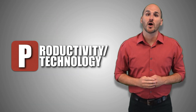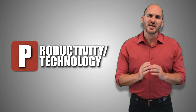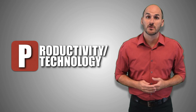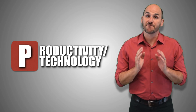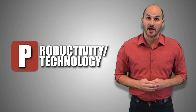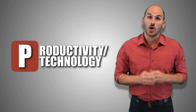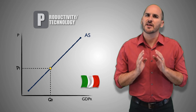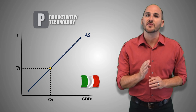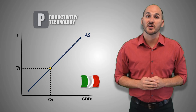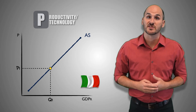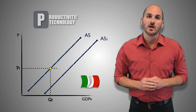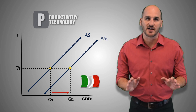Productivity refers to the quantity of output produced per unit of input. When each unit of land, labor, or capital can produce more output, they have become more productive. When productivity increases or decreases, it fundamentally changes aggregate supply and therefore the economy as a whole. For example, suppose that Italian engineers develop a new production technique that doubles the productivity of every worker in the Italian workforce. This means that Italian workers can now produce twice as many goods and services as they used to in the same amount of time. This increase in productivity will cause an increase in short-run aggregate supply across the entire economy.